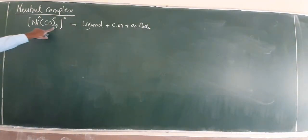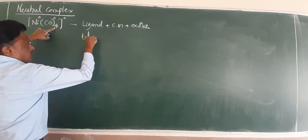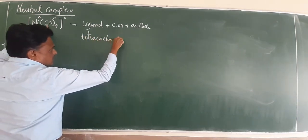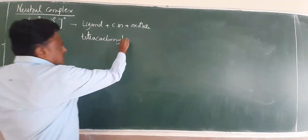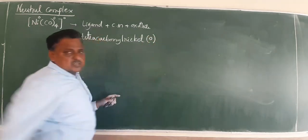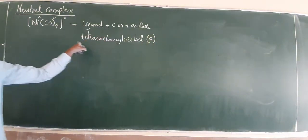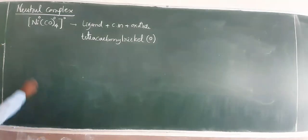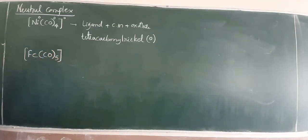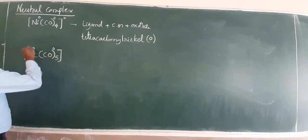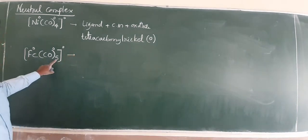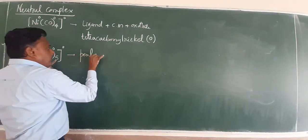How to mention? Generally, very simple: ligand, central metal, oxidation state. What are the ligands? This is tetra carbonyl nickel.